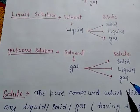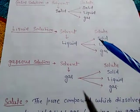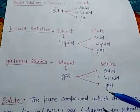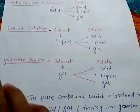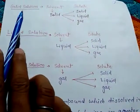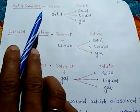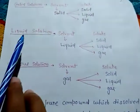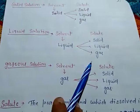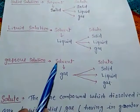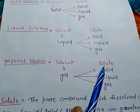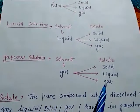It means that there are nine types of solution in total. A solid solution has three types, a liquid solution has three types, and a gaseous solution also has three types of solution.